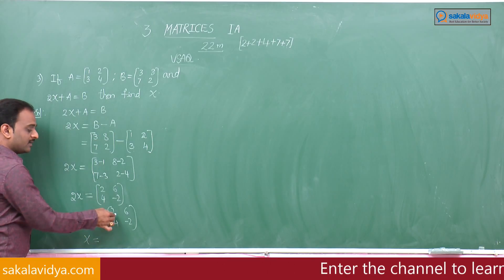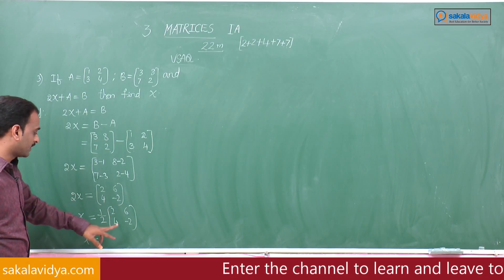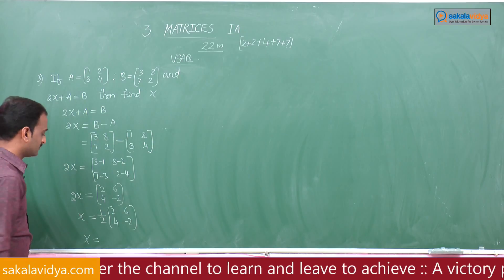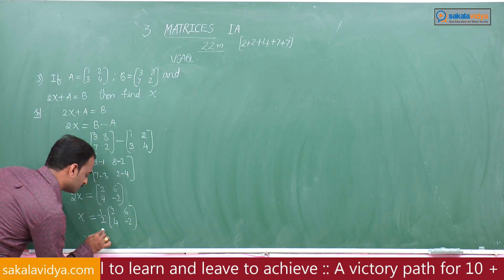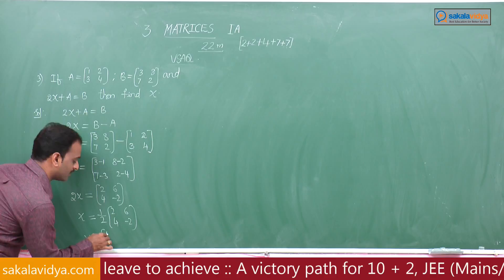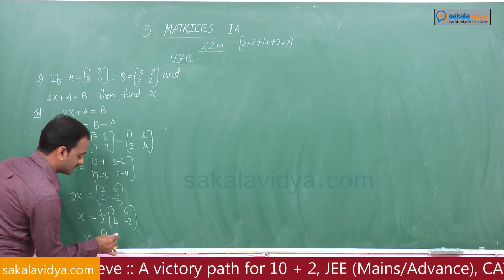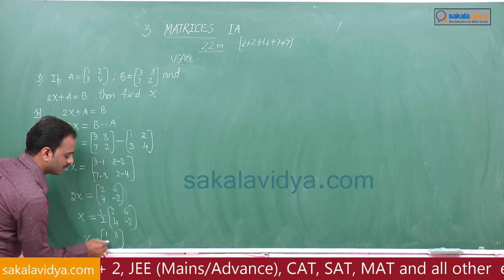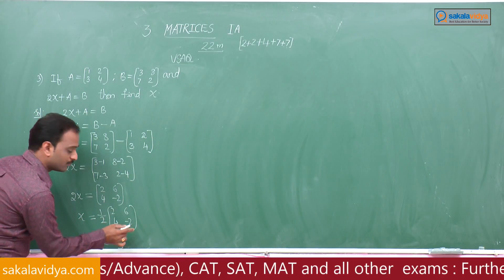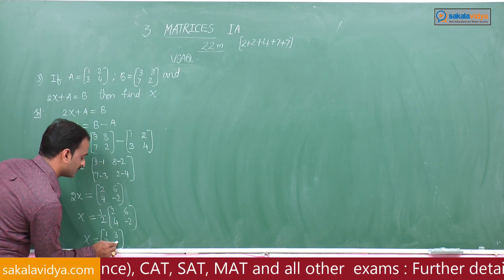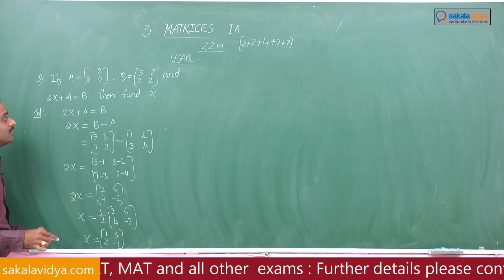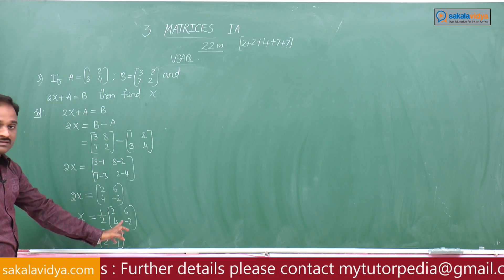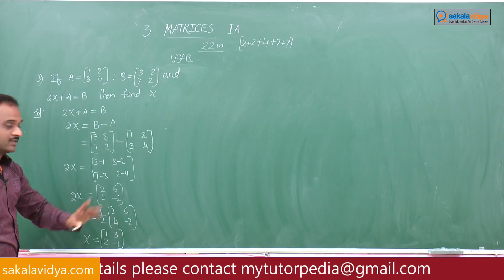Multiplying each element of the matrix by 1/2: 1/2 into 2 gives 1, 1/2 into 6 gives 3, 1/2 into 4 gives 2, 1/2 into -2 gives -1. So the required matrix X equals [1, 3; 2, -1].